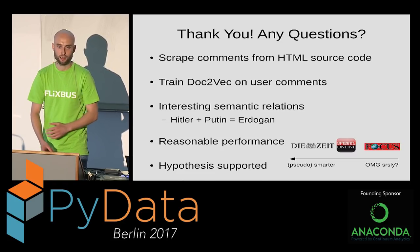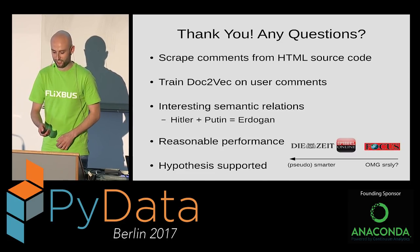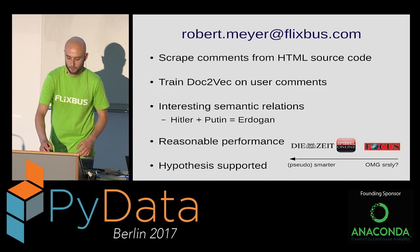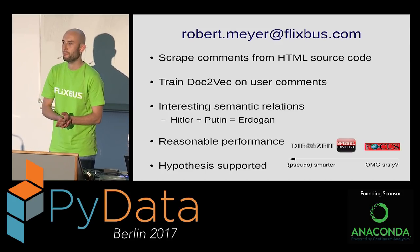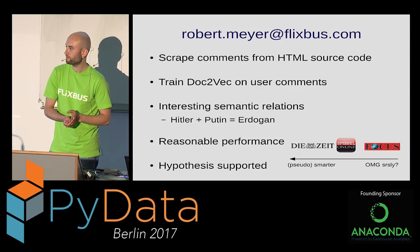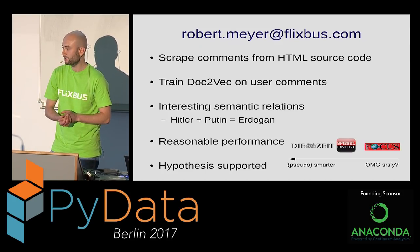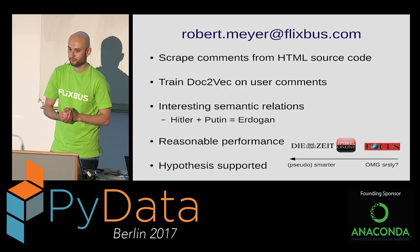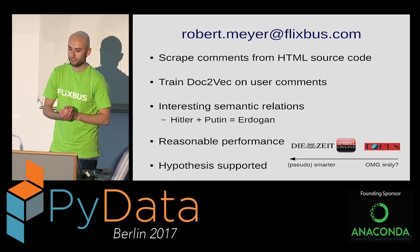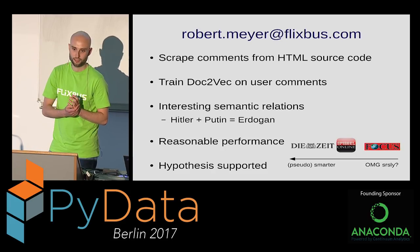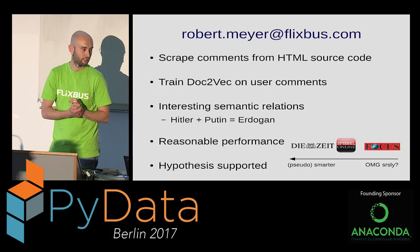Let me do a short recap. I started by scraping comments from HTML source code from three different news outlets. I used that data to train a Doc2Vec network on the user comments, uncovering interesting semantic relations. I then used the Doc2Vec embeddings as input to a machine learning classifier with reasonable performance — it could classify where comments originated from. And looking at the prototypical examples, the initial hypothesis clearly holds. Thank you very much.